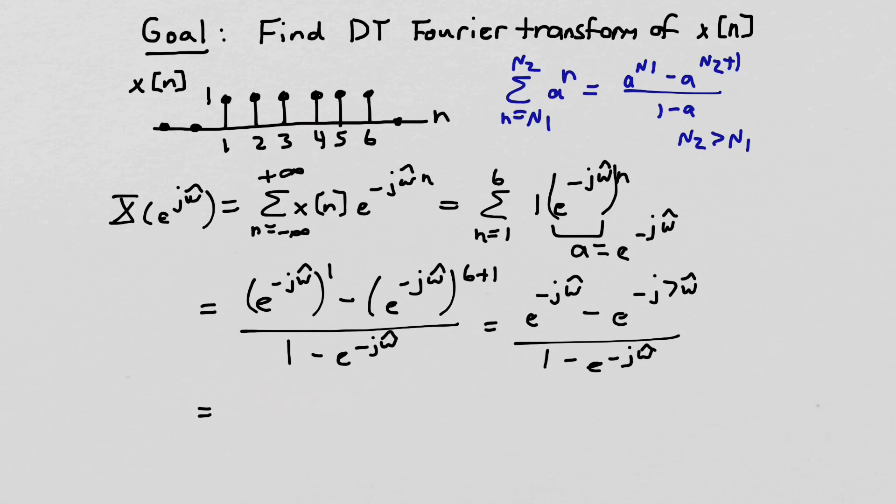So let me just see what I can do here. So let me get set up. So I'm going to have something that's pulled out there, but in general, I want to be able to write this as e^(j6ω̂/2) minus e^(-j6ω̂/2). Because again, 6 is the length of my signal, and I still have the denominator here.